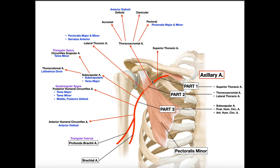Once the first part traverses underneath the initial part of pectoralis minor, it transitions into part two. Part two goes all the way until the axillary artery emerges from underneath pectoralis minor. So if you're looking at an anterior view, part two is completely deep to pectoralis minor, and it has two branches.